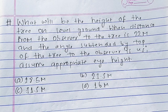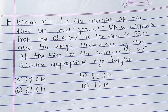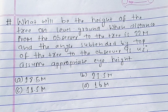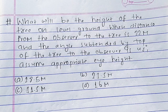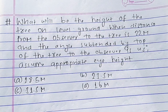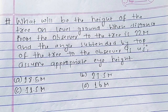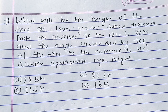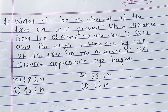The question is: what will be the height of the tree on level ground when the distance from the observer to the tree is 22 meters, and the angle subtended by the top of the tree to the observer is 45 degrees? Assume appropriate eye height. The options are given — first calculate the height of the tree, then tick the right answer.